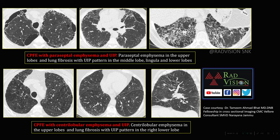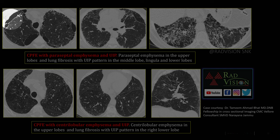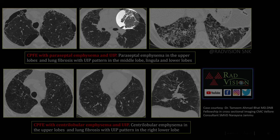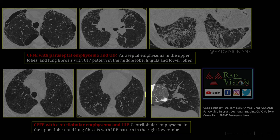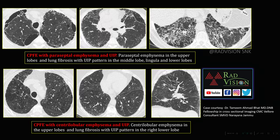We will see two different cases. In the first case, there are paraseptal emphysematous changes in the upper lobes and a UIP pattern in the right middle lobe, left lingular segment, and bilateral lower lobes. In the second case of CPFE, you can see centrilobular emphysematous changes in the upper lobes and a UIP pattern clearly visible in the right lower lobe. Both these cases represent CPFE.